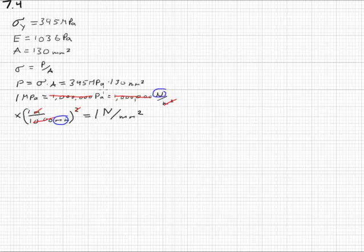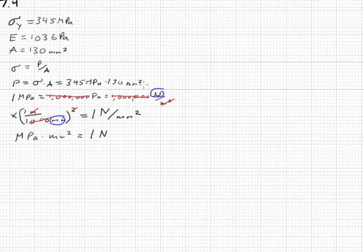So, getting back to this, if a megapascal is a newton per square millimeter, then a megapascal times a square millimeter is simply equal to 1 newton. All I did was multiply both sides of this equation by square millimeters, and I ended up with 1 newton.